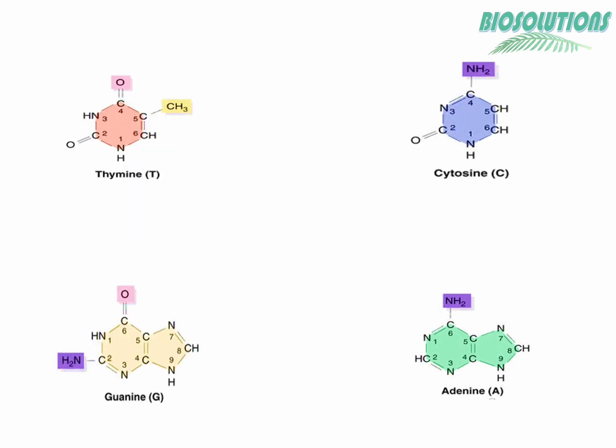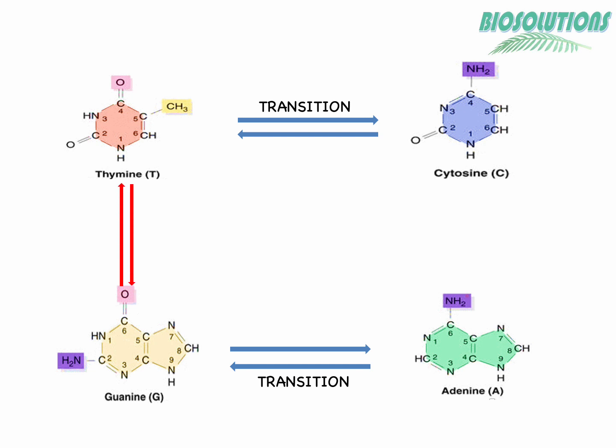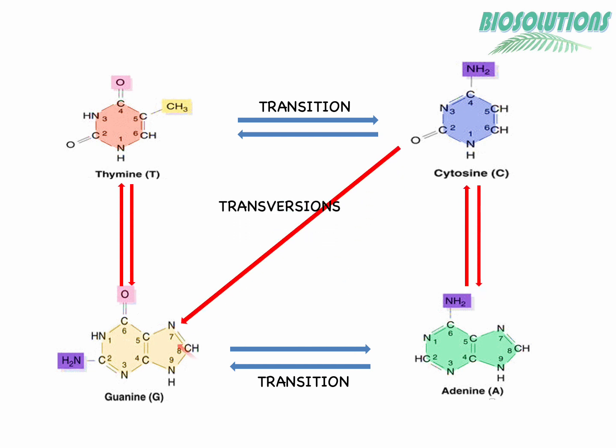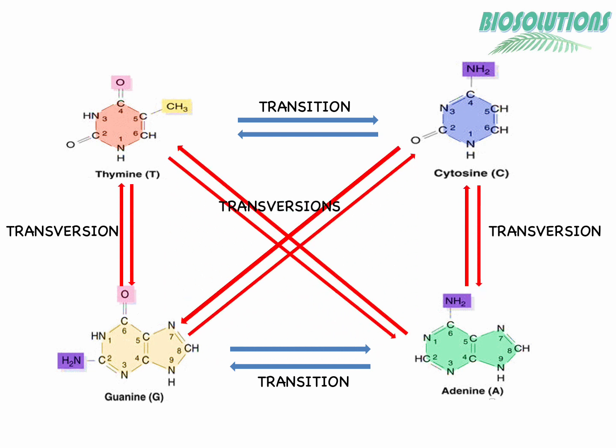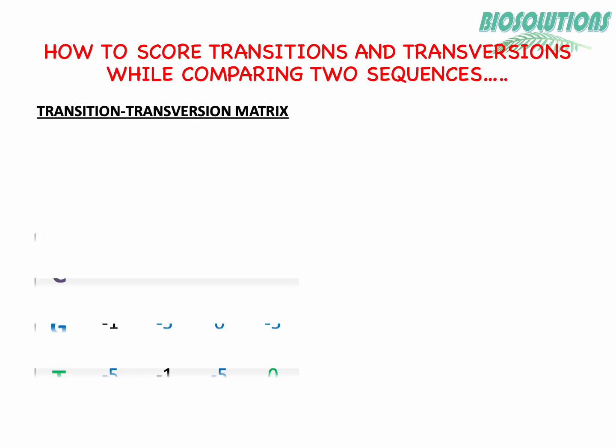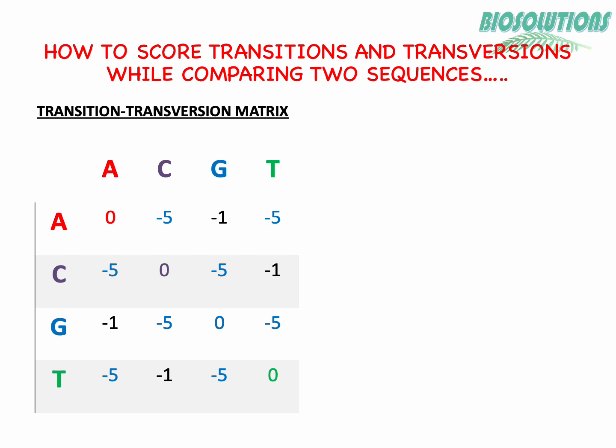This figure summarizes all possible transitions and transversions. The frequency of transitions observed in DNA sequences is much greater than the frequency of transversions — we see more transition mutations in a DNA sequence than transversion mutations. Keeping these natural frequencies in mind, a weight matrix called the transition transversion matrix is used while comparing two related DNA sequences.